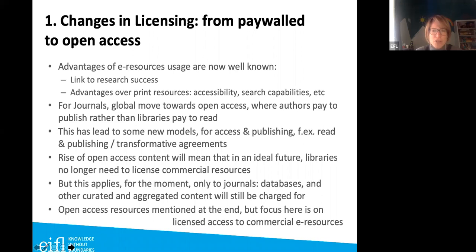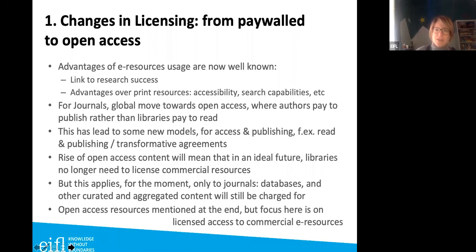In the last few years, specifically for journals, there's been a move towards open access — more articles are published open access, where authors pay to publish rather than libraries paying to read. This has brought new models such as read-and-publish agreements. In an ideal future, you wouldn't need to license journal content anymore, but we're quite a while away from that. Databases and other aggregated content still require licensing.